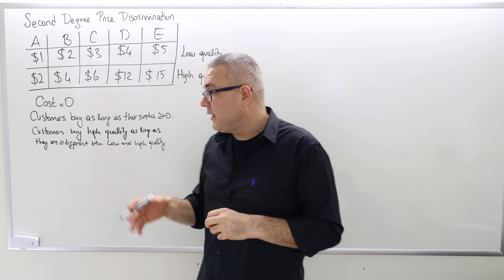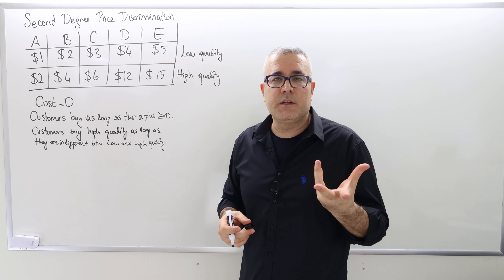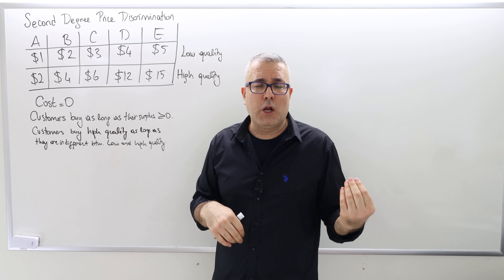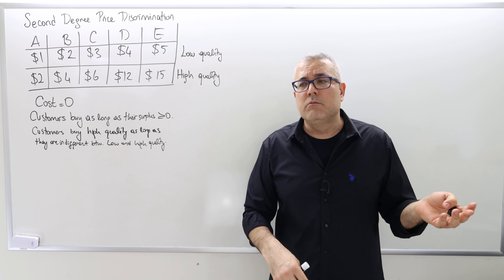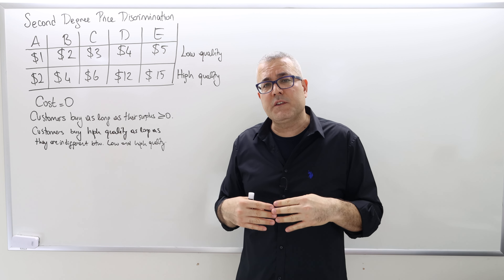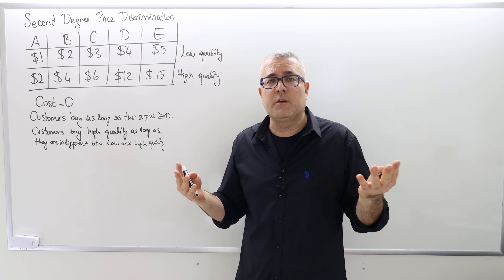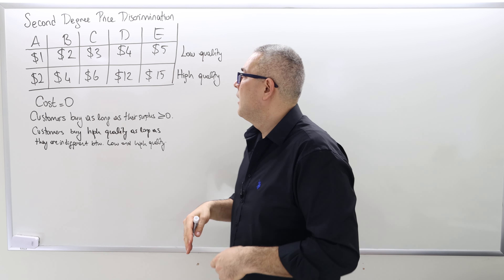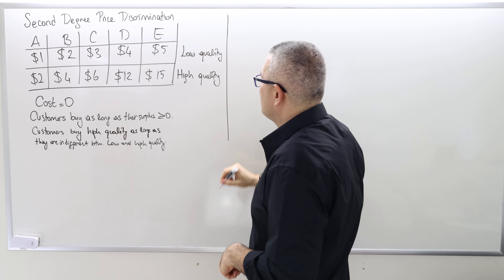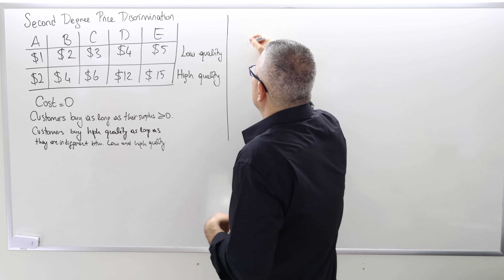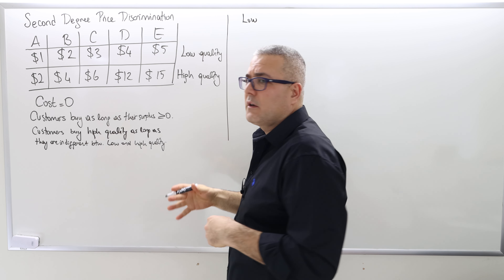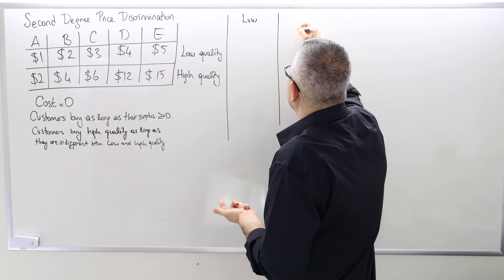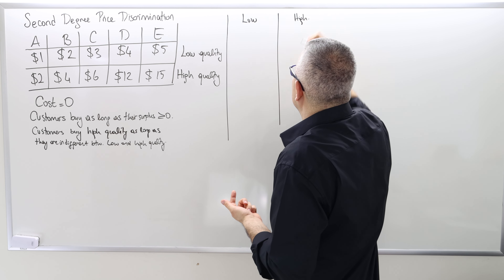The question for the monopolist's strategy: should the monopolist produce only high quality, only low quality, and if so, what should be the optimal prices? Or should the monopolist produce both high and low quality, and if so, what should be the prices? I'm going to solve this step by step. Let's say only the low quality product is offered — we already did that, but it will be a recap. And then let's consider the case where only the high quality product is offered.